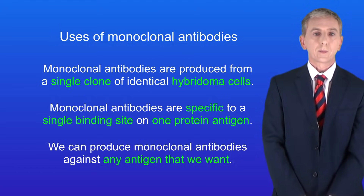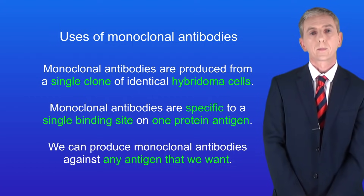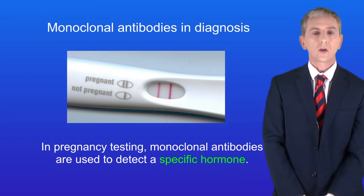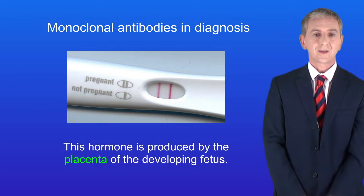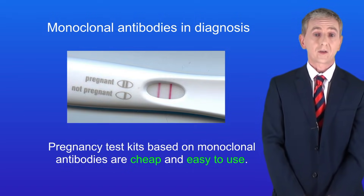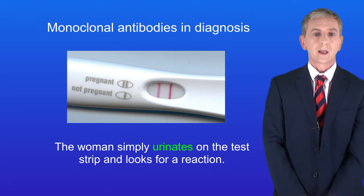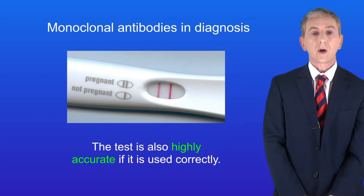Monoclonal antibodies are used for diagnosis, and a good example is in pregnancy testing. In pregnancy testing, monoclonal antibodies are used to detect a specific hormone produced by the placenta of the developing fetus. Pregnancy test kits based on monoclonal antibodies are cheap and easy to use — the woman simply urinates on the test strip and looks for a reaction. The test is also highly accurate if used correctly.